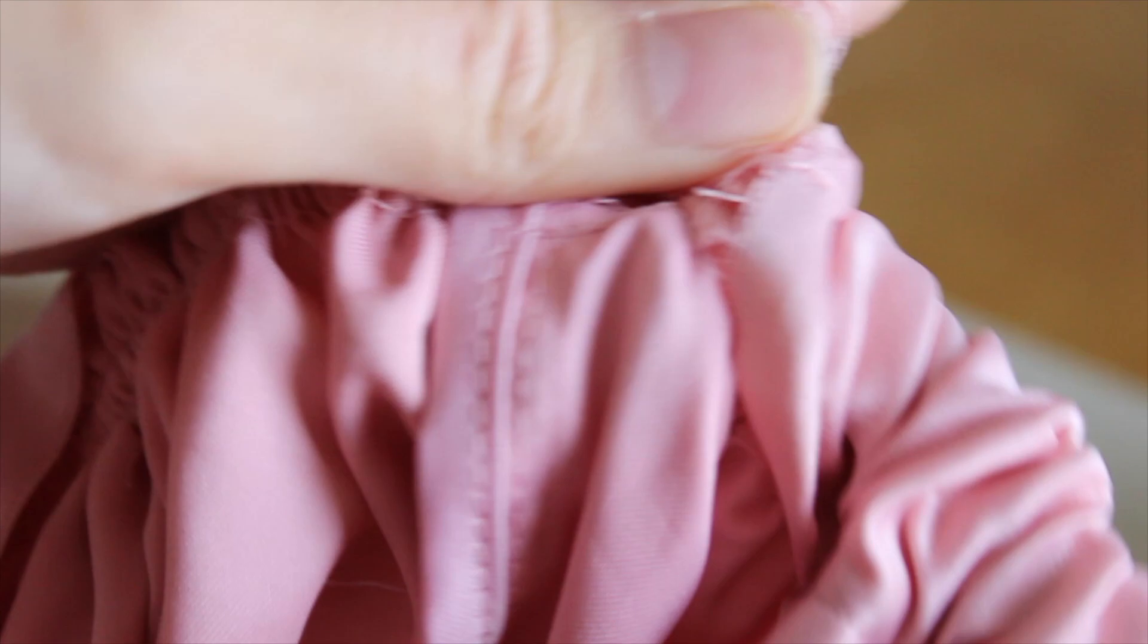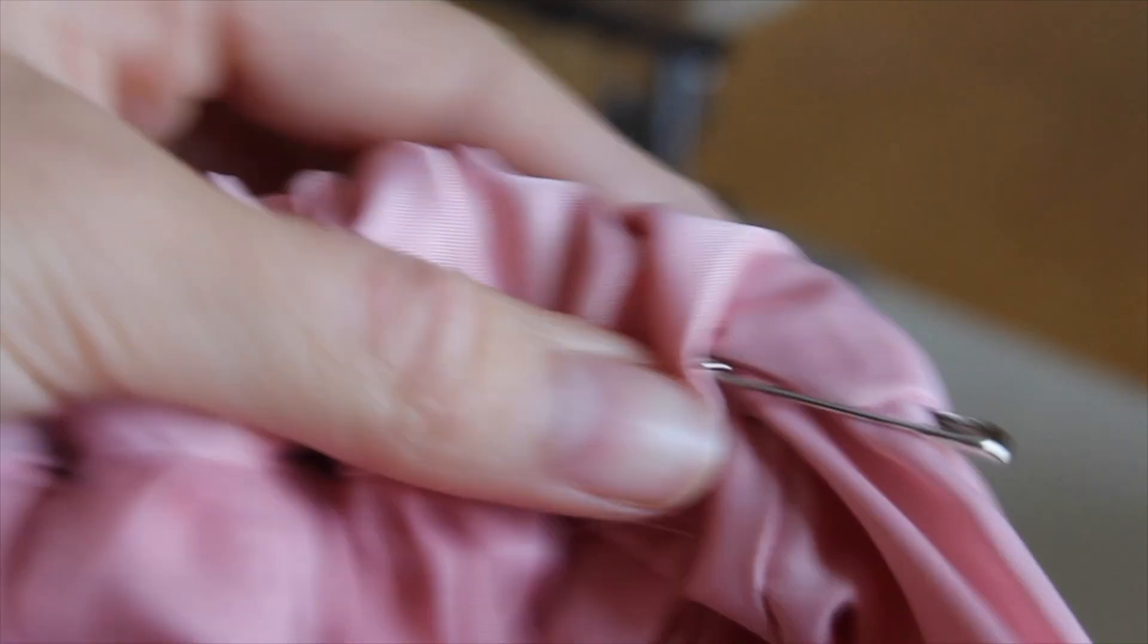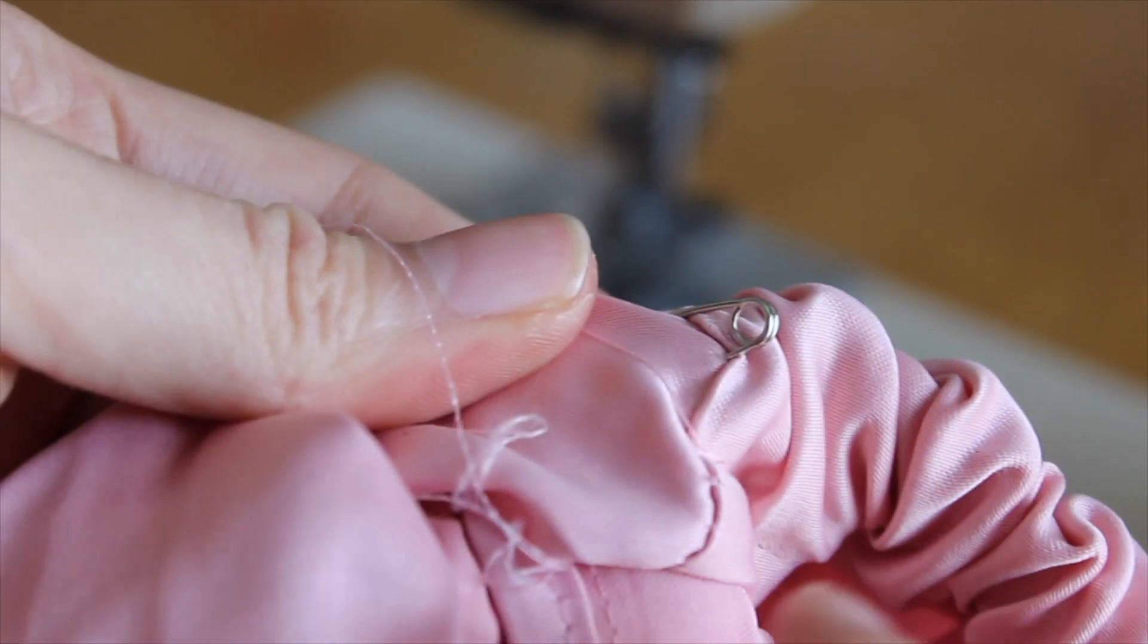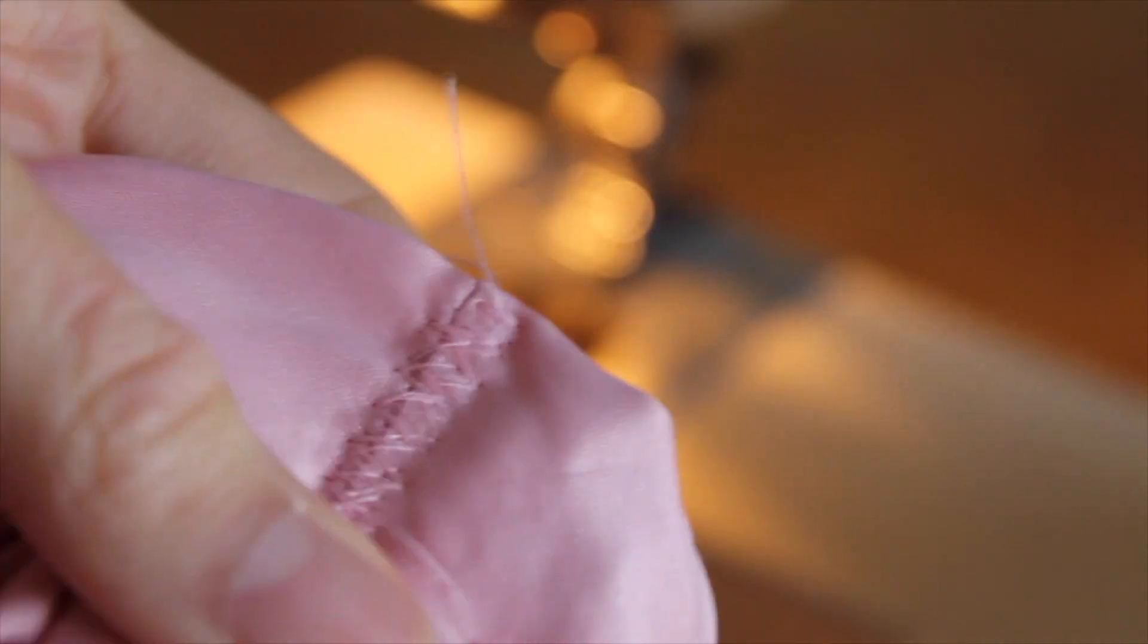I measured out a piece of elastic that was the size of the shorter piece of the waistband plus a 2 cm seam allowance on each side. I then threaded the elastic through the long part of the waistband and zigzagged it closed on each side. This is what it should look like once it's done. I now went ahead and sew the rest of the waistband shut.